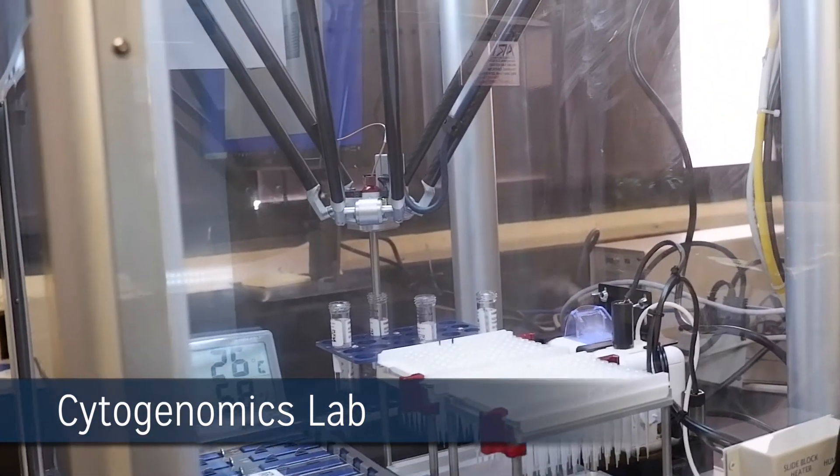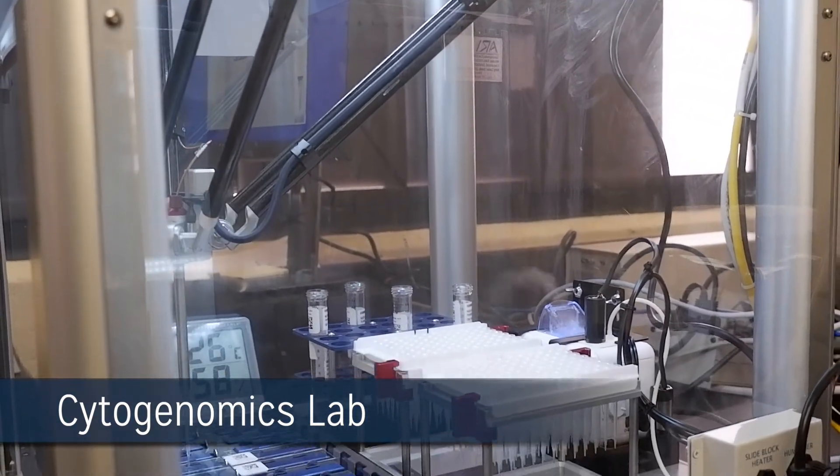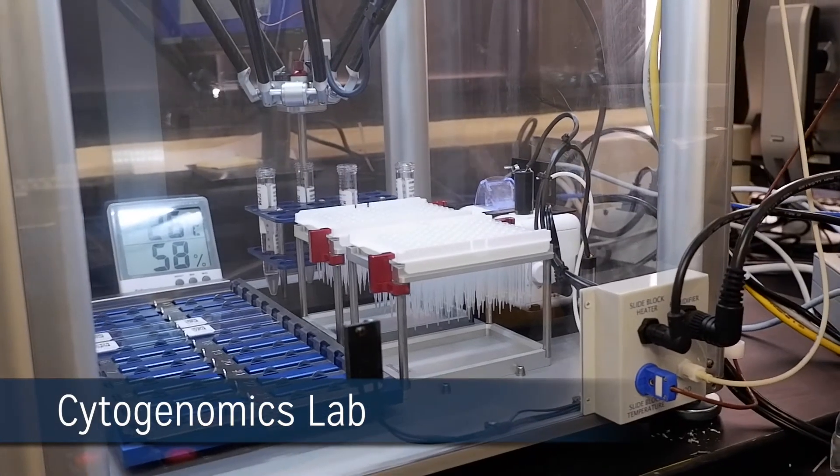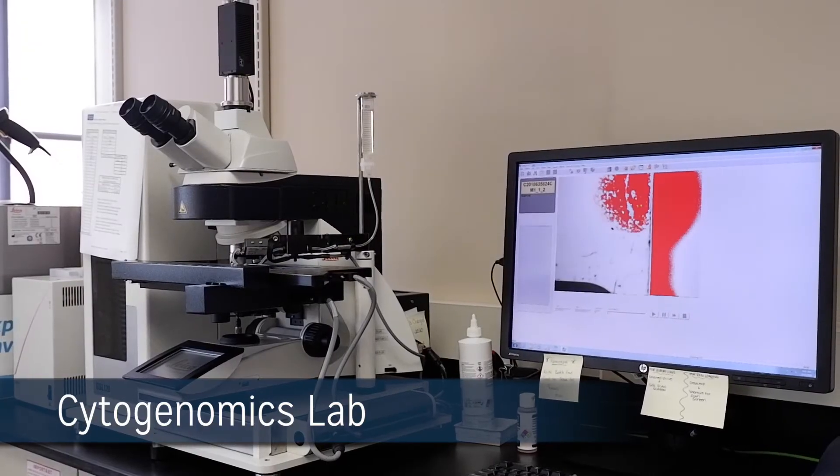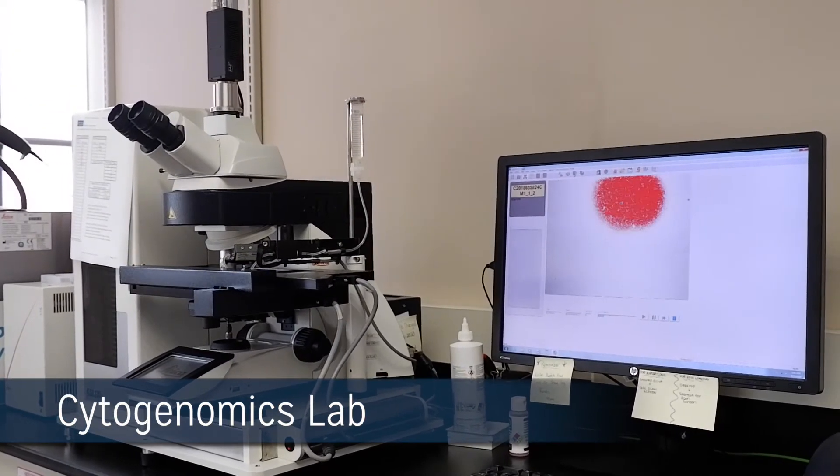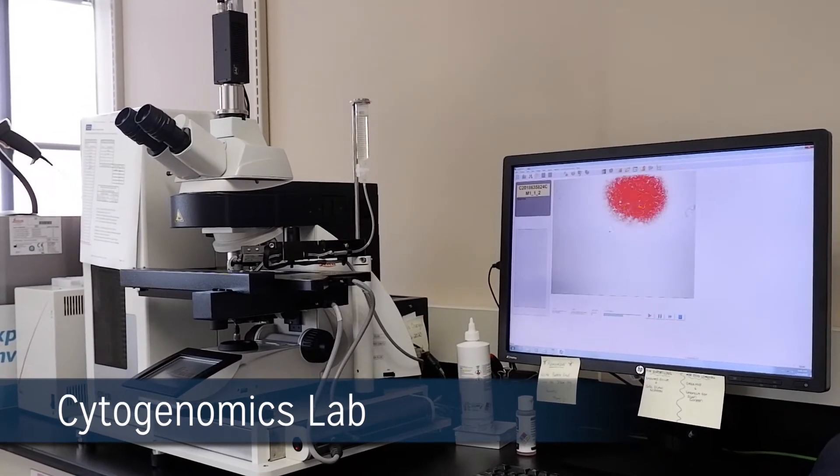The slides are stained using an automated slide stainer. Then the metaphase cells are digitally scanned using the Leica Biosystems GSL metaphase scanner. The automated cell finder and imaging station captures and enhances cells, providing the technologists with hundreds of cells for analysis.